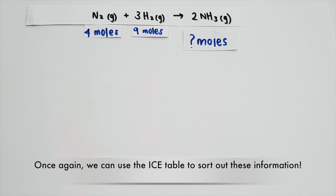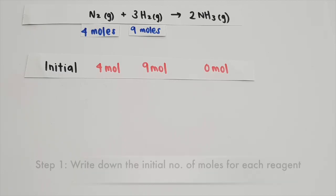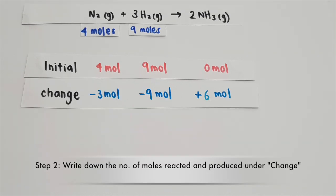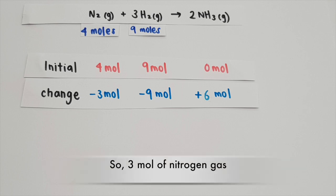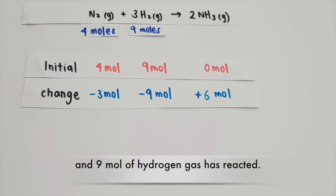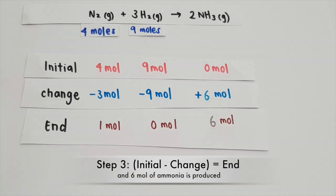Once again, we can use the ICE table to sort out this information. We write down the initial number of moles for each reagent, followed by the number of moles reacted and produced under change. Three moles of nitrogen gas and nine moles of hydrogen gas has reacted, and six moles of ammonia is produced.